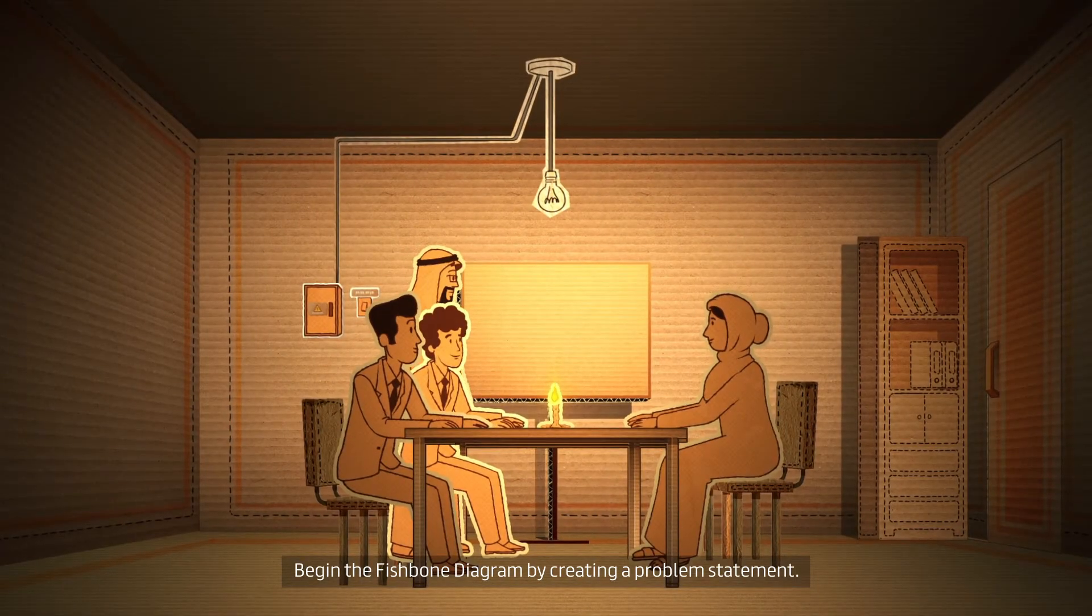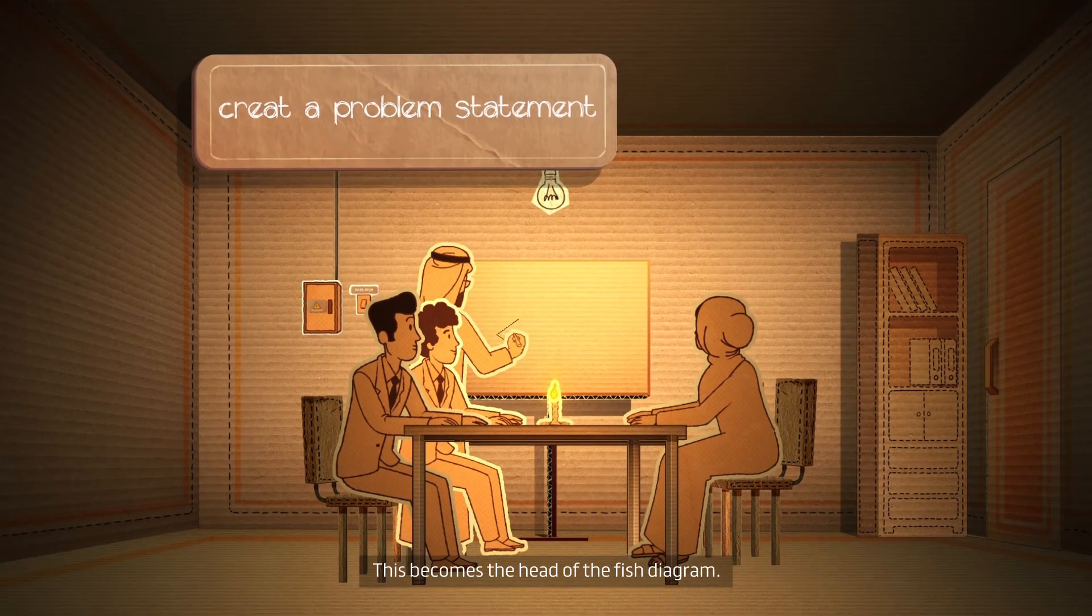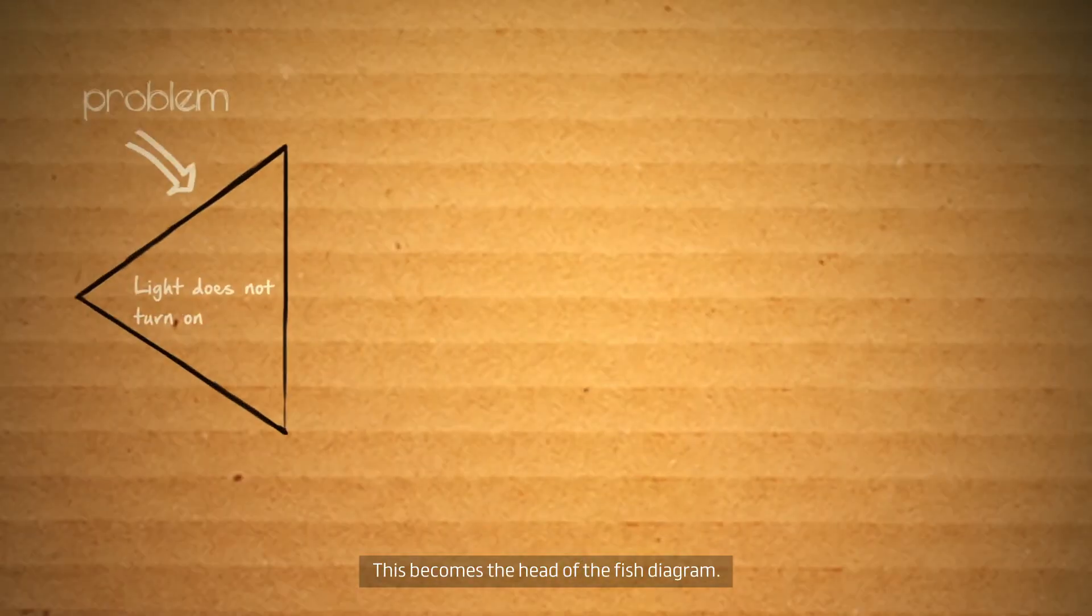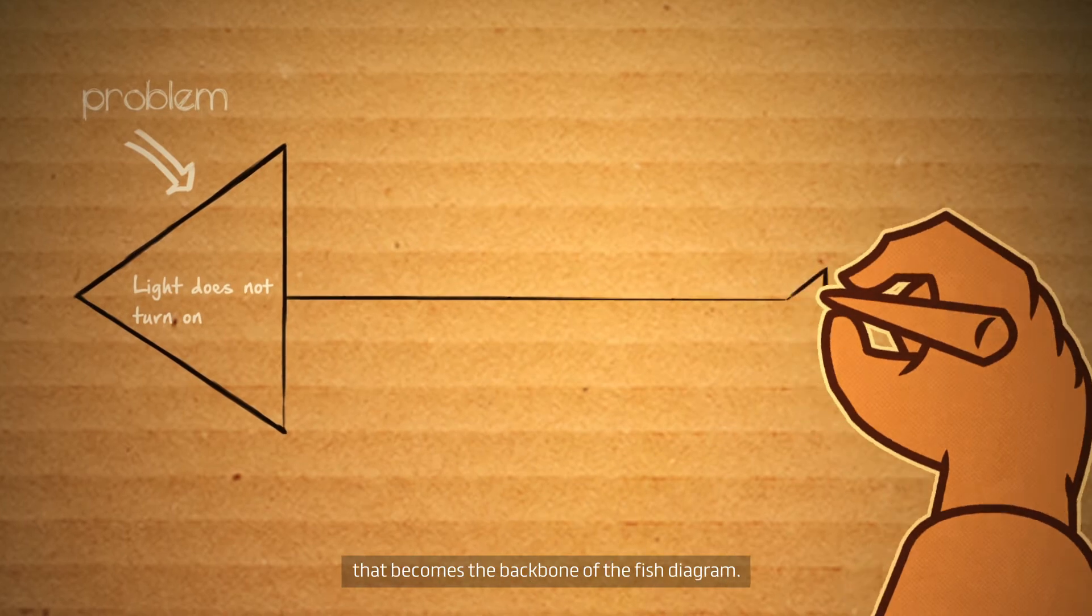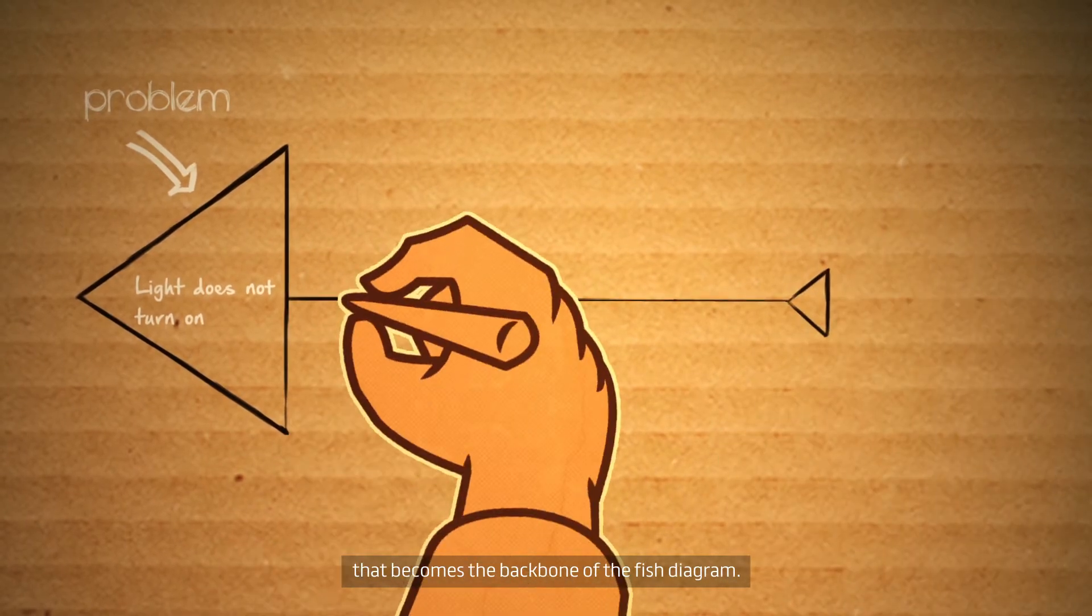Begin the fishbone diagram by creating a problem statement. This becomes the head of the fish diagram. Then draw a line extending from the head that becomes the backbone of the fish diagram.